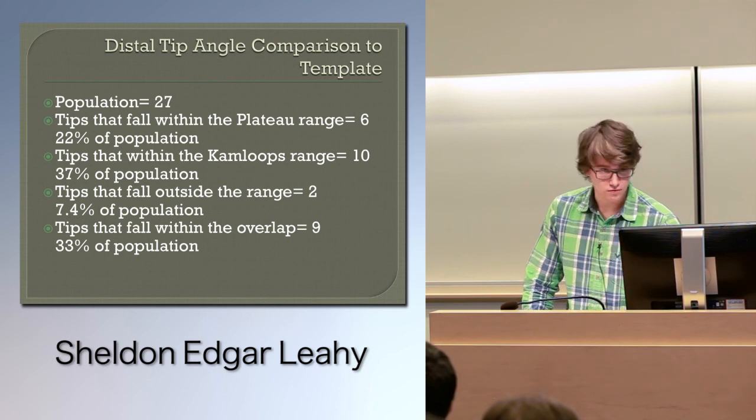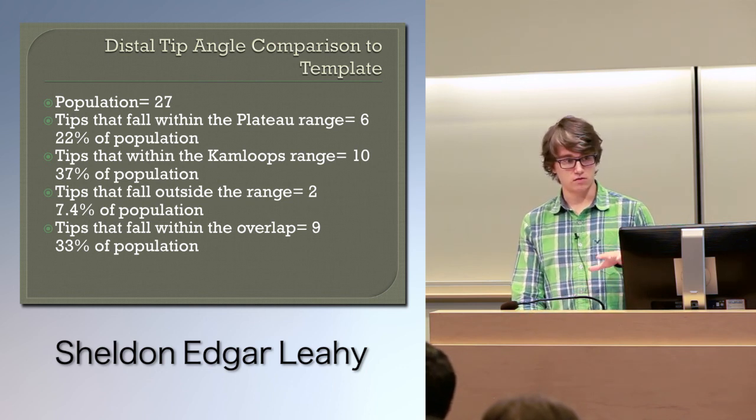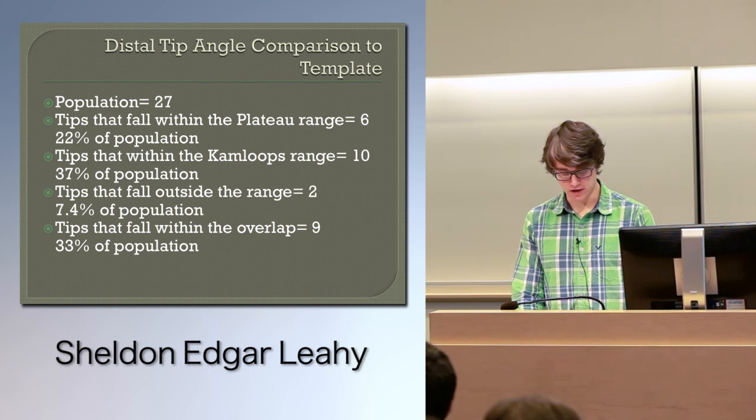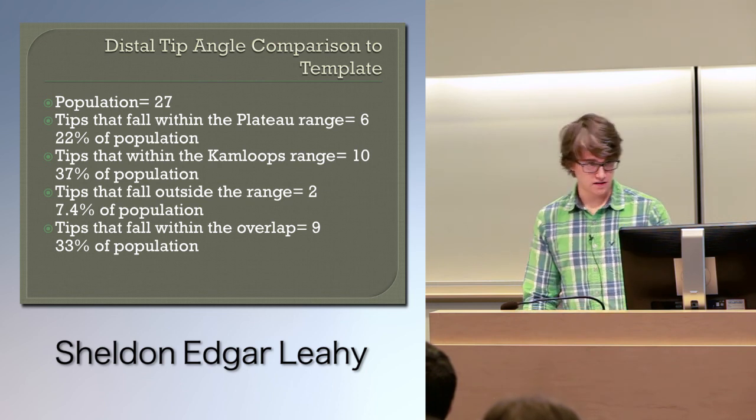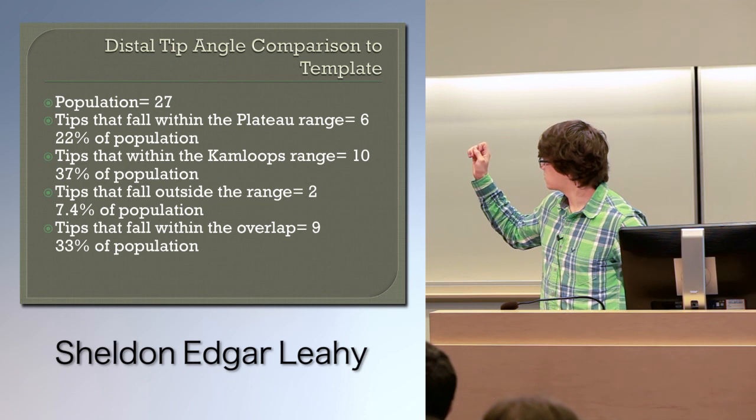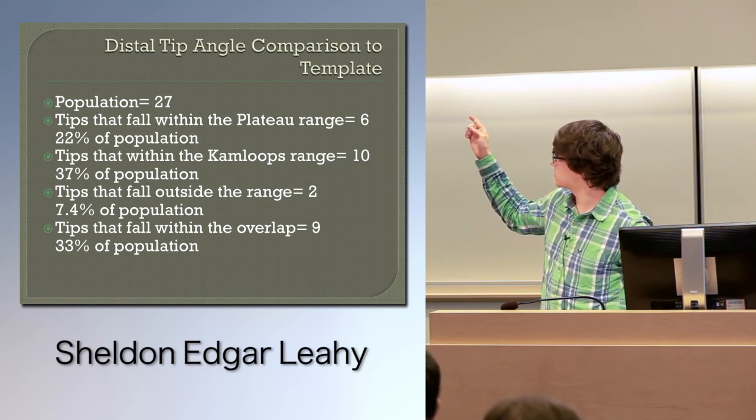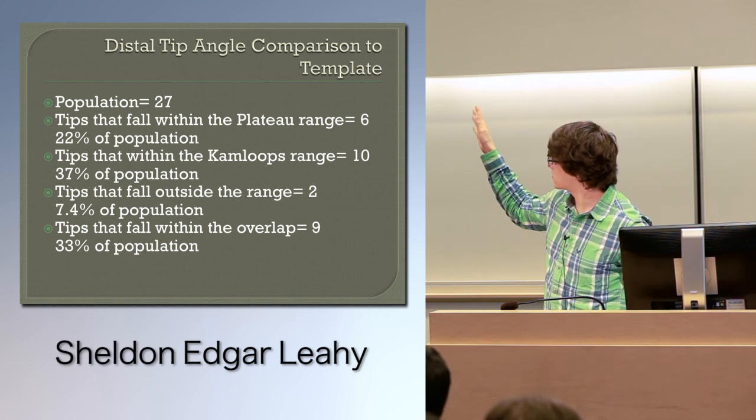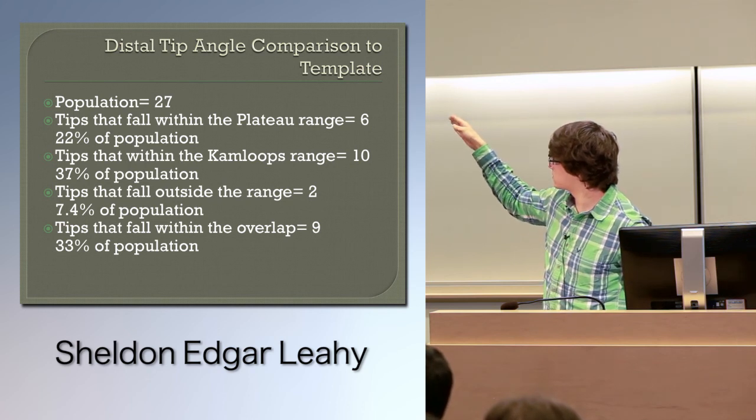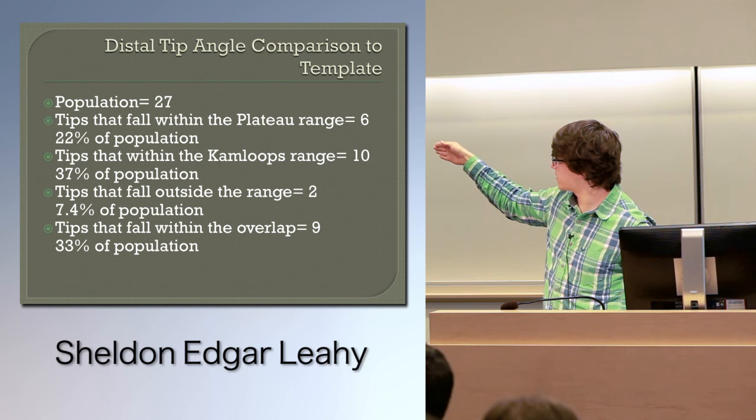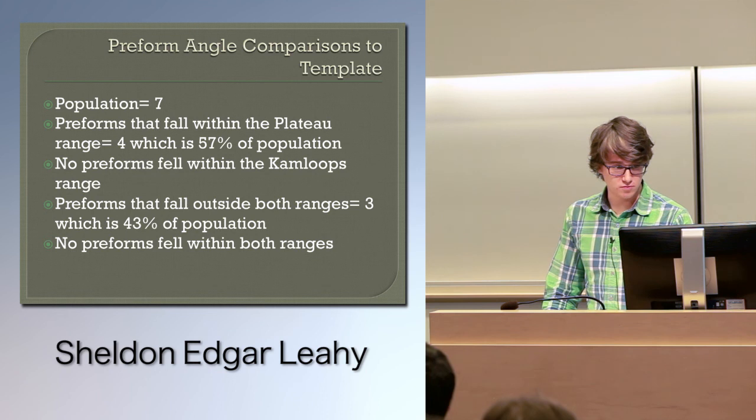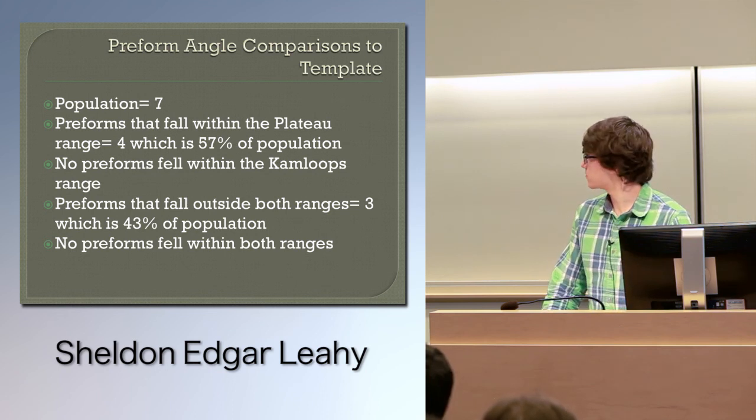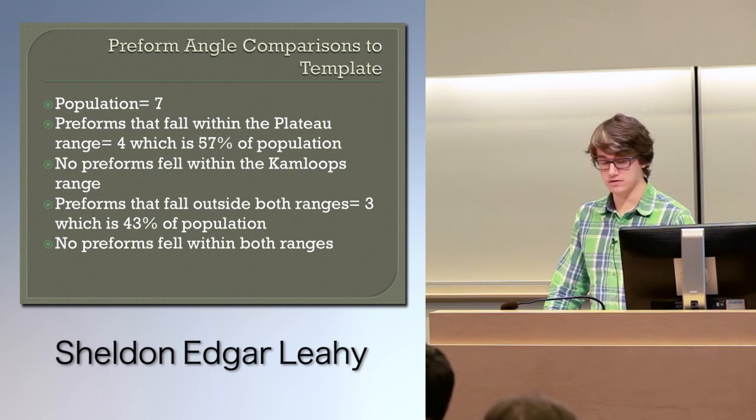Now I ran real world, I tested these templates. I created four ranges: fall within a plateau point, fall within Kamloops point, fall outside, or fall in between. The population of 27 of the distal tip fragments came up with relatively all right for the plateau range and Kamloops range, but there's many that fall within, and it really skews my percentage populations. The preforms, I only had seven to go with, and three fell outside, so they were reduced with all.